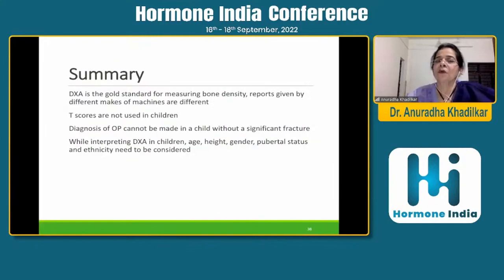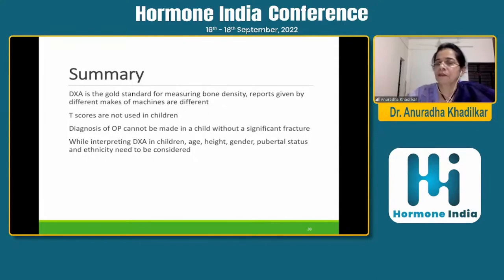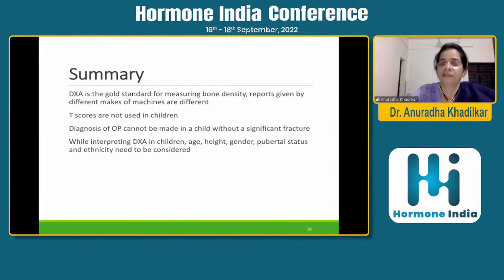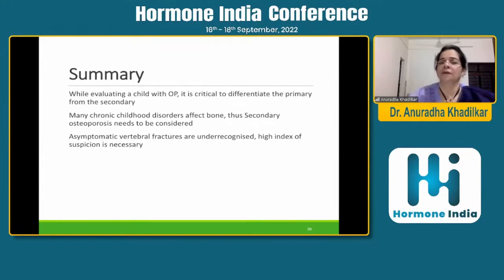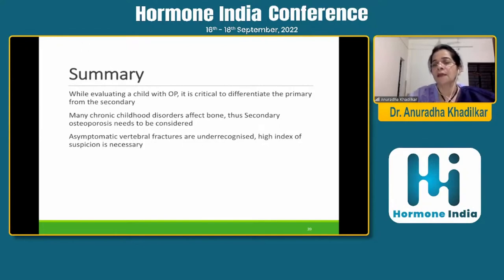To summarize: DEXA is the gold standard for measuring bone density. Reports given by different machines are different. T-scores are not used in children — we use Z-scores and ISCD guidelines. Diagnosis of osteoporosis cannot be made in a child based on densitometry alone without a significant fracture. When interpreting DEXA in children, age, height, gender, pubertal status, and ethnicity must be considered — Indian children's bones differ from Western children's. It is critical to differentiate primary from secondary osteoporosis, since secondary osteoporosis also requires treating the primary condition. Many chronic childhood disorders affect bones. Asymptomatic vertebral fractures are under-recognized, and a high index of suspicion is necessary.